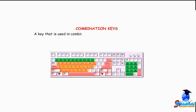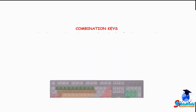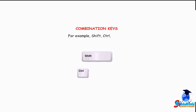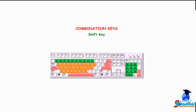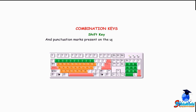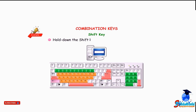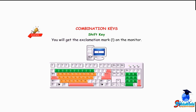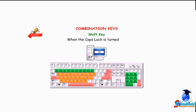A key that is used in combination with another key for doing a particular operation is called a combination key. For example, Shift, Ctrl, and Alt. Shift key — the Shift key is used to type special symbols and punctuation marks present on the upper part of the keys. There are two Shift keys on the keyboard. For example, hold down Shift and press number key 1 to get the exclamation mark. It is also used to type alphabets in capital letters when Caps Lock is turned off.